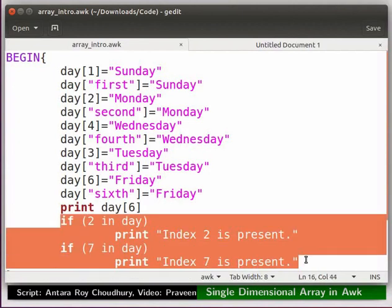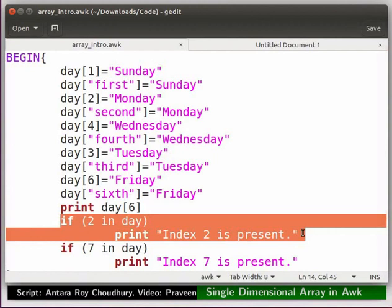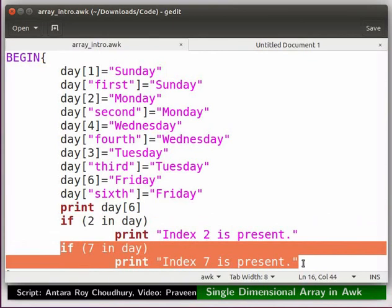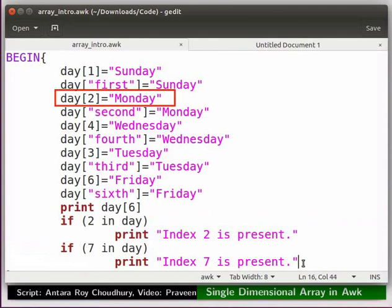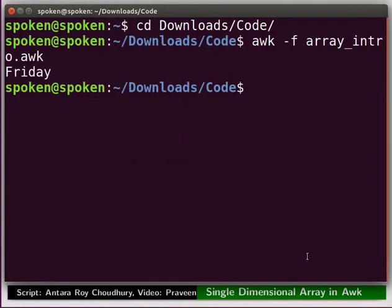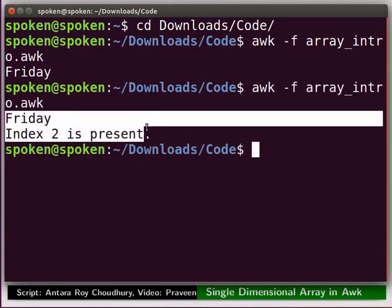Now, I have added two if conditions. The first if condition checks whether the index 2 is present in day. If yes, then the corresponding print statement will get executed. Then, the second condition checks whether the index 7 is present in day. It will execute the print statement if it is true. As we can see, index 2 is in the array and 7 is not. Let's execute this file to verify the output. Switch to the terminal, press the up arrow key to get back the previously executed command, and press enter to execute. We get the output as expected.